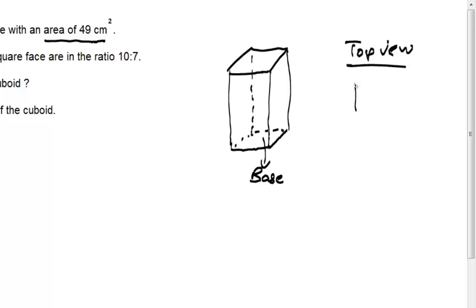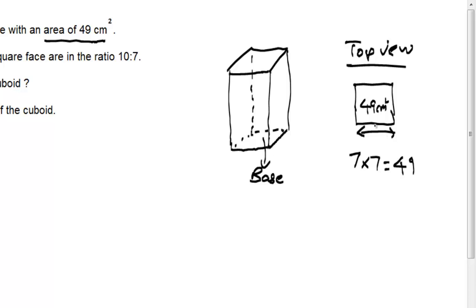The base will look somewhat like this. The area of this base is 49 square centimeters. We know that 7 times 7 equals 49, therefore the length of the edge of the square is 7 centimeters. This side is also 7 centimeters, and this side is 7 centimeters.